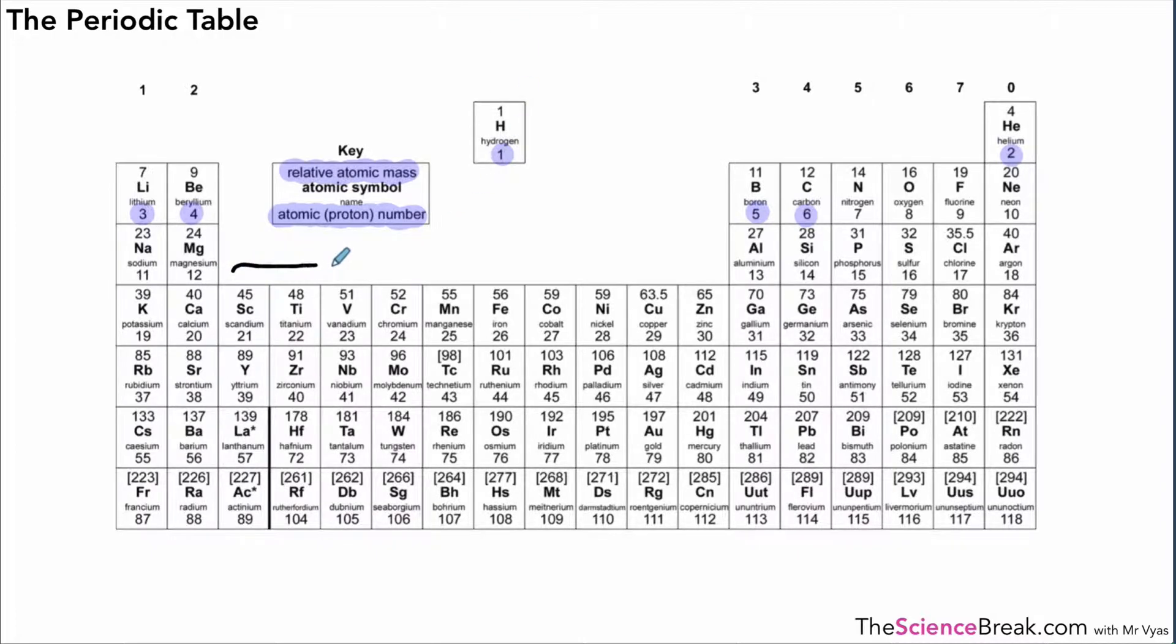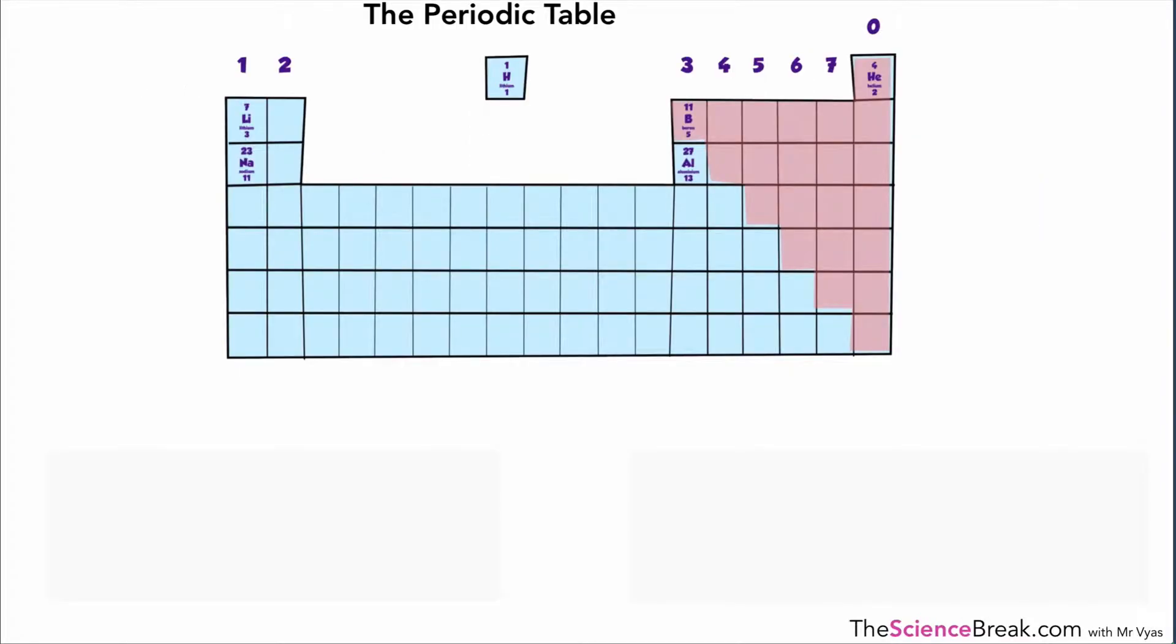In the big section here in the middle, between the numbers two and three, between groups two and three, we have what's called the transition metals. That's found in that big block in the middle. What we can actually do is just remove a lot of the detail and just look at an outline of the periodic table and see how it is arranged overall.